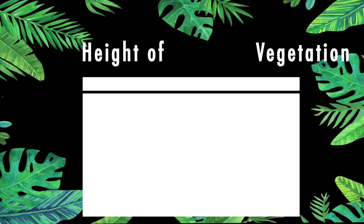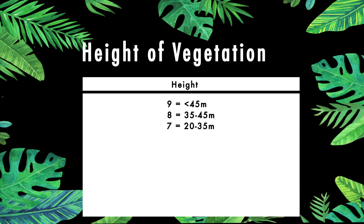To subjectively describe the structure of the canopies or the height of the vegetation, we use numbers ranging from 1 to 9. Nine is for the highest strata and 1 for the lowest.